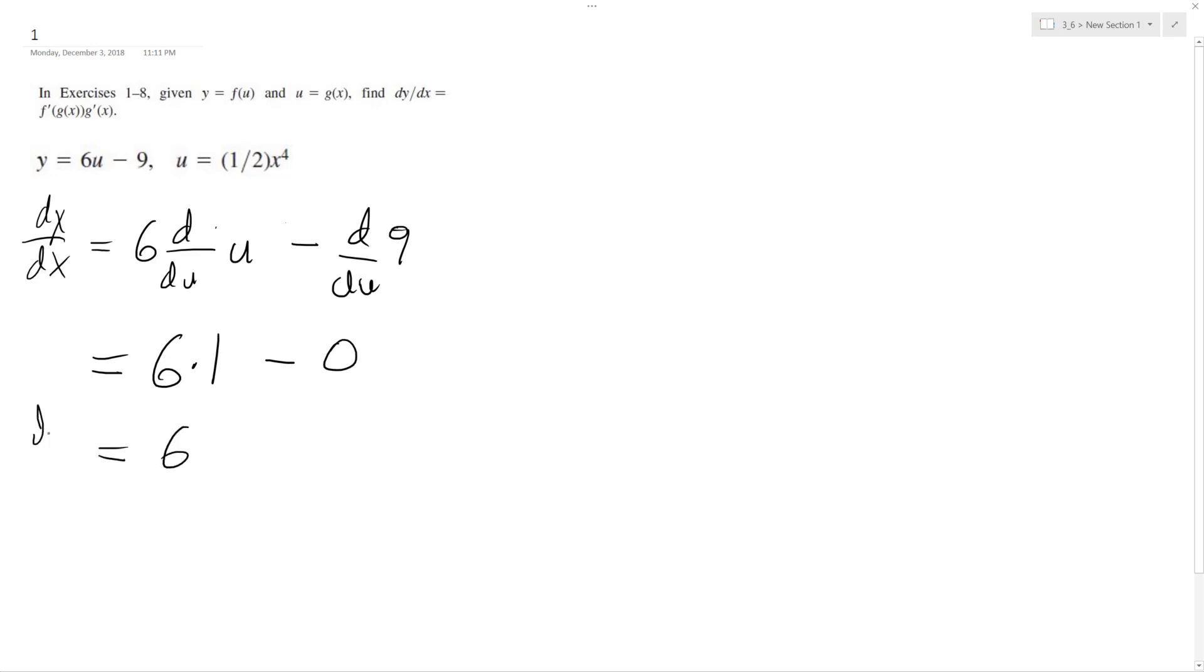So this is dy/du. Then we have du/dx equal to 1/2 times d/dx of x raised to the 4th. We get 1/2 times 4x to the 3rd, which equals 2x to the 3rd.